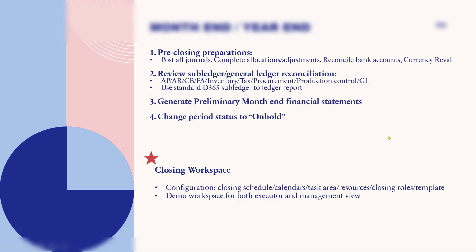From a process perspective, year-end close is very similar to month-end, meaning you still need to first pre-close and complete all preparation work — for example, post all journals and complete allocations. The second step is to run your sub-ledger and general ledger reconciliation, then generate the preliminary year-end financial statements, check the results, and finally change the period on hold.